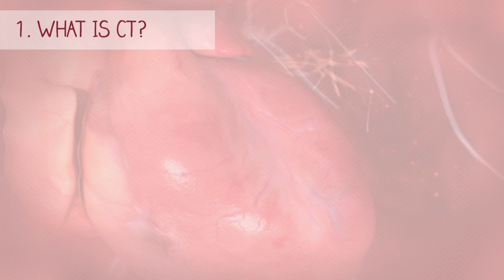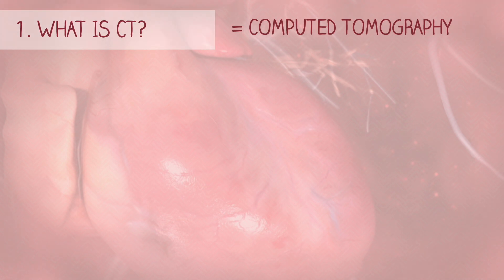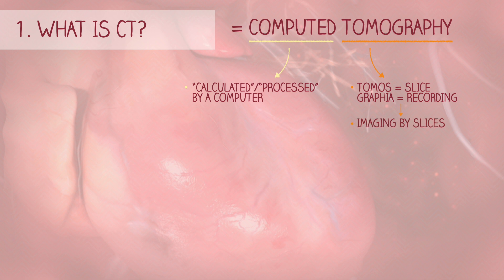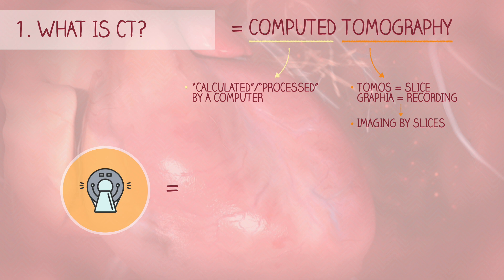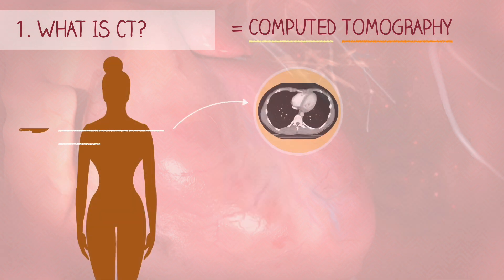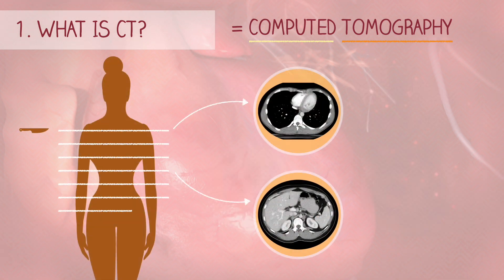First of all, what is a CT? CT stands for computed tomography. Computed means processed by a computer, and tomography comes from the Greek word tomos, meaning slice, and graphia, meaning describing or recording. So tomography literally means imaging by slices. Putting it all together, computed tomography essentially means creating cross-sectional images of the body with the help of a computer. It's like slicing a loaf of bread to see each individual layer.